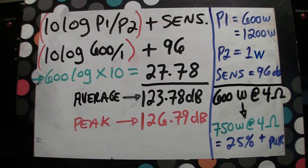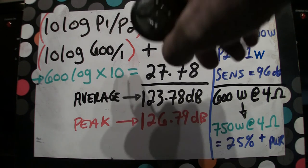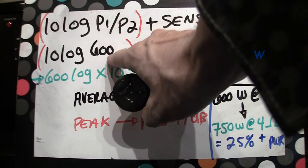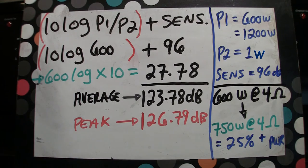So when we put this equation together, we go 10 log 600 divided by one. That's the one watt of pink noise and that's the average power of the speaker. We don't really need the one, so let's just take the one out of there and simplify it and go 10 log 600 plus 96.